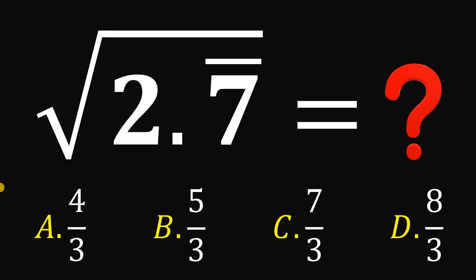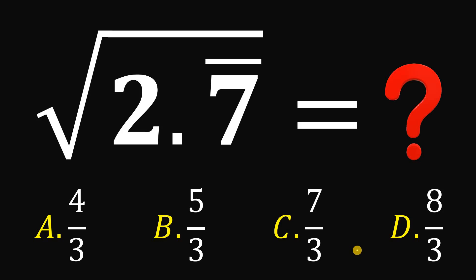What is the value of this number, square root of 2.7 repeating? Is it a) 4 over 3, b) 5 over 3, c) 7 over 3, or d) 8 over 3?